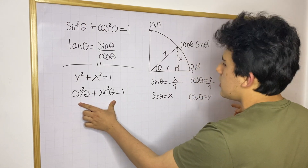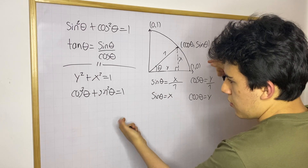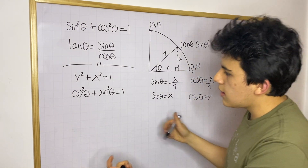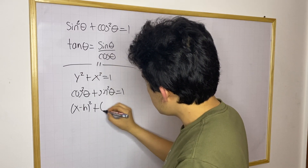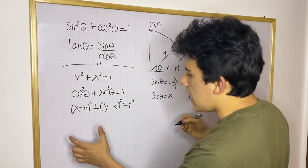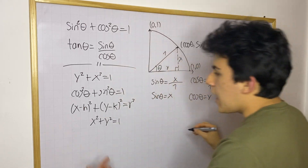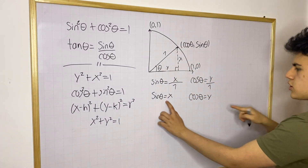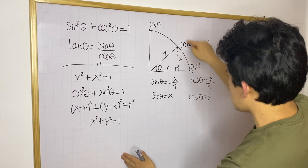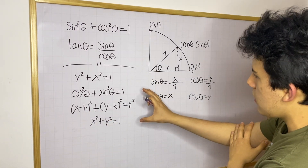Another way to derive this: the general equation for a circle is (x − h)² + (y − k)² = r². For the unit circle, h and k are zero and r equals 1, so the equation becomes x² + y² = 1. Since we know that for any point on the circumference the coordinates are cosine theta and sine theta, you can plug those in and once again obtain the same identity.